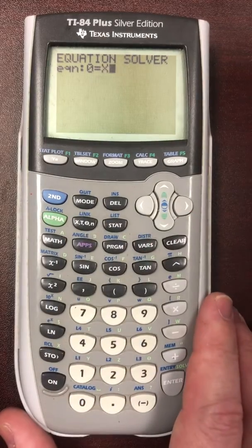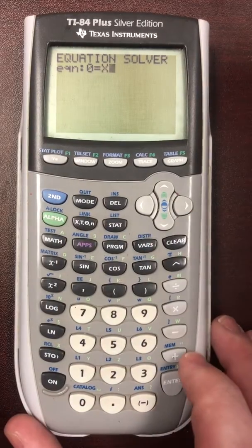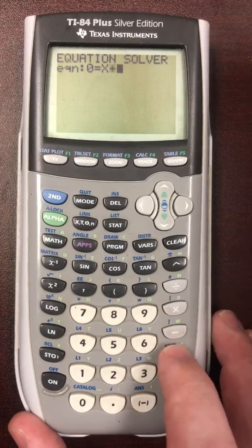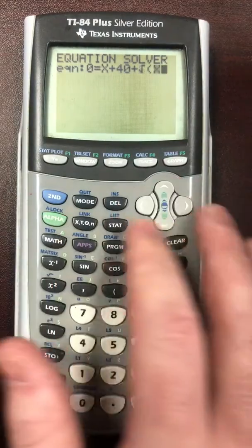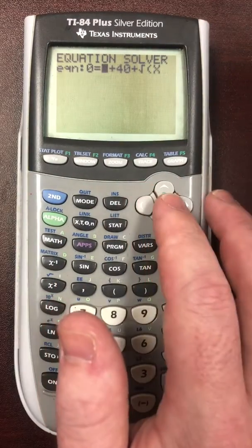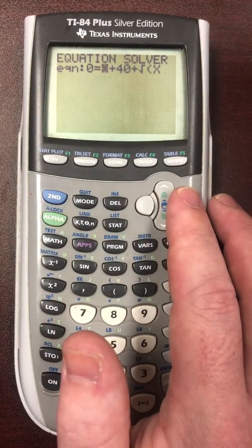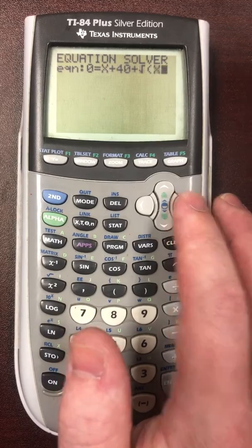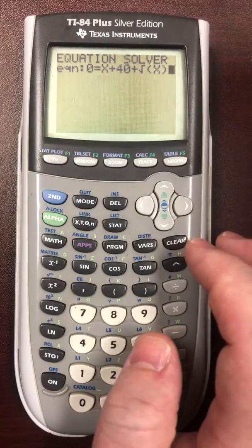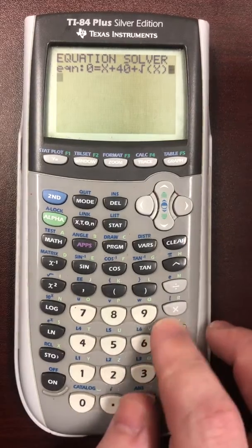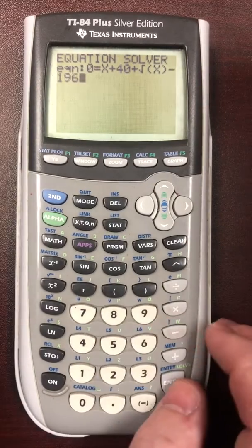So we know that big plus small is 196. The equation that we wrote a second ago is x plus 40 plus the square root of x, because the big one is x and the small one can be rewritten as 40 plus the square root of the big one. Now that equals 196. So to make the overall equation equal to zero, we would need to subtract 196.